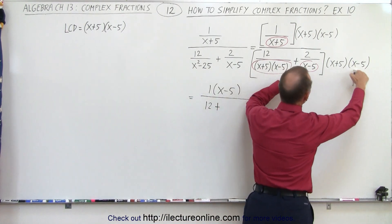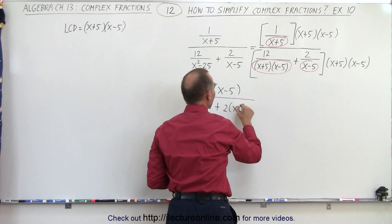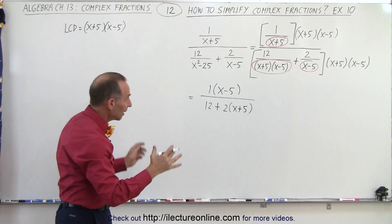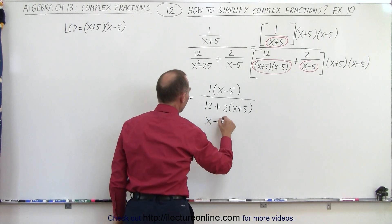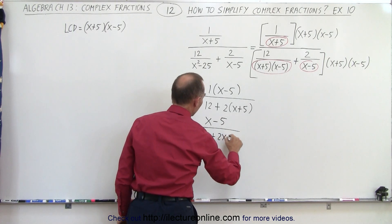Plus, here, only the x minus 5 cancels out, and we're left with plus 2 times x plus 5. Now all we have to do is multiply things out and collect common terms. So this is in the numerator, x minus 5, divided by 12, plus 2x, plus 10,